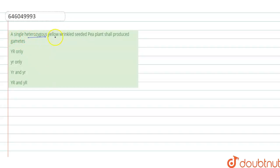A single heterogeneous yellow wrinkled seeded pea plant shall produce. Here some options are given: first is capital Y and capital R only, second is small y and small r only, third is capital Y small r and small y and small r, and fourth is capital Y capital R and small y and capital R.